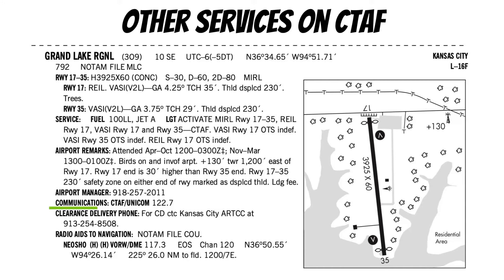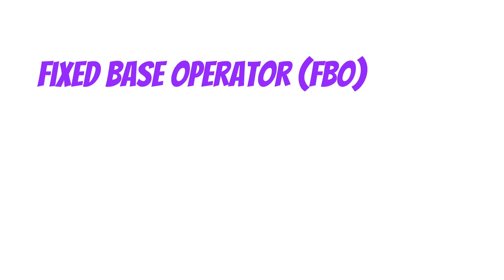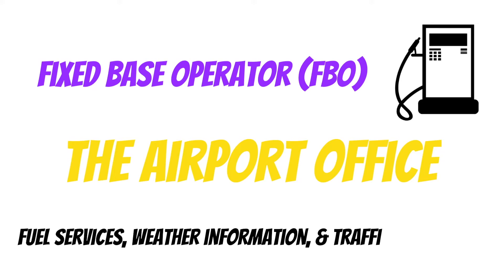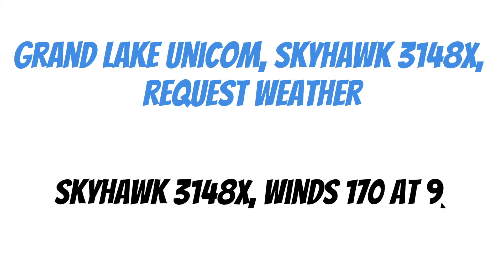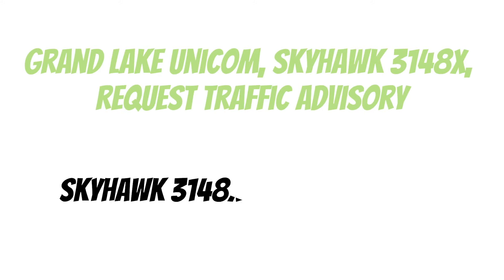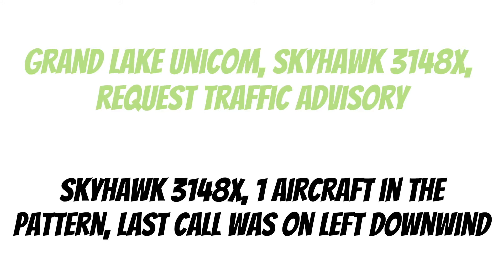Did you know you can sometimes receive other services over the CTAF frequency? If the CTAF at your airfield is also a unicom frequency, you can receive a few additional things. These unicom frequencies are usually operated by fixed-base operators on the airfield — the private businesses that sell fuel and other aviation services. Sometimes they're run by the airport office, operated by a city or county. A few things you could request on a unicom frequency are fuel services, weather information, and traffic advisories. For example, requesting weather: 'Grand Lake Unicom, Skyhawk 3148 X-Ray, request weather.' Response: 'Skyhawk 3148 X-Ray, winds 170 at 9, recommending runway 17.'